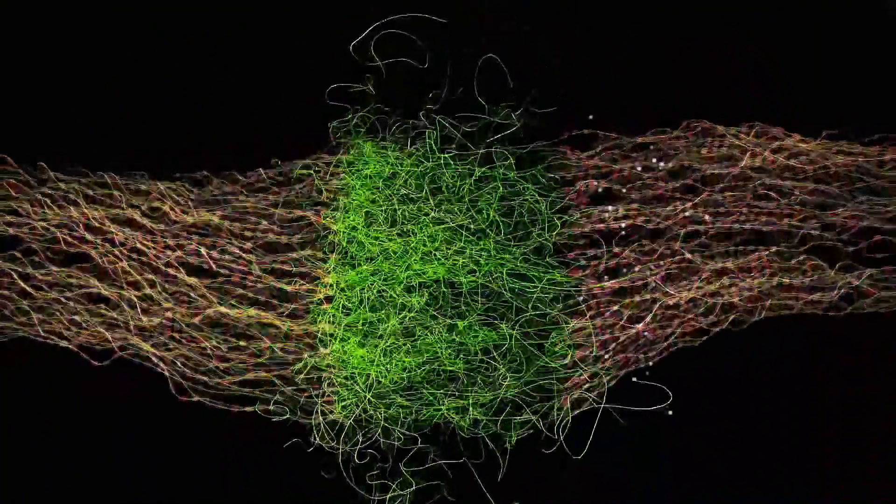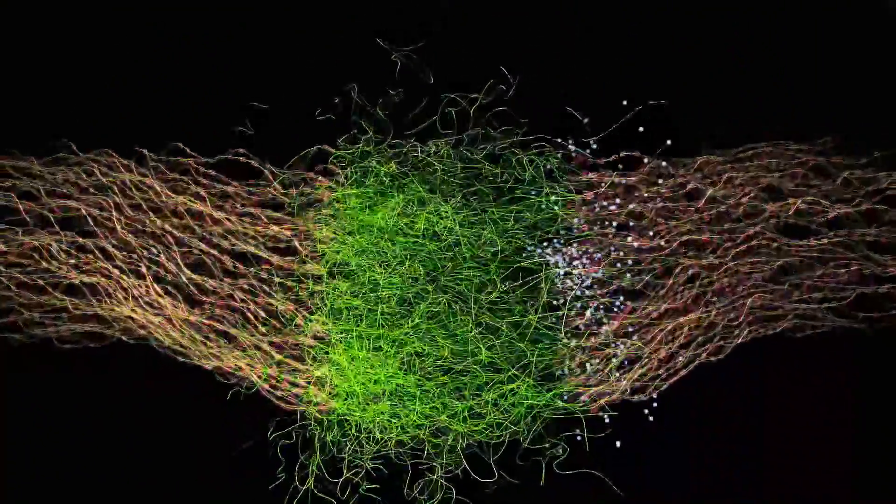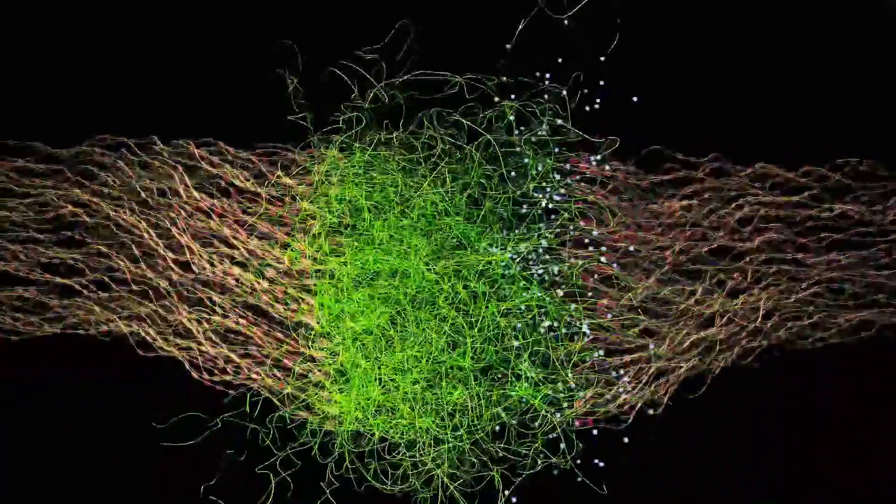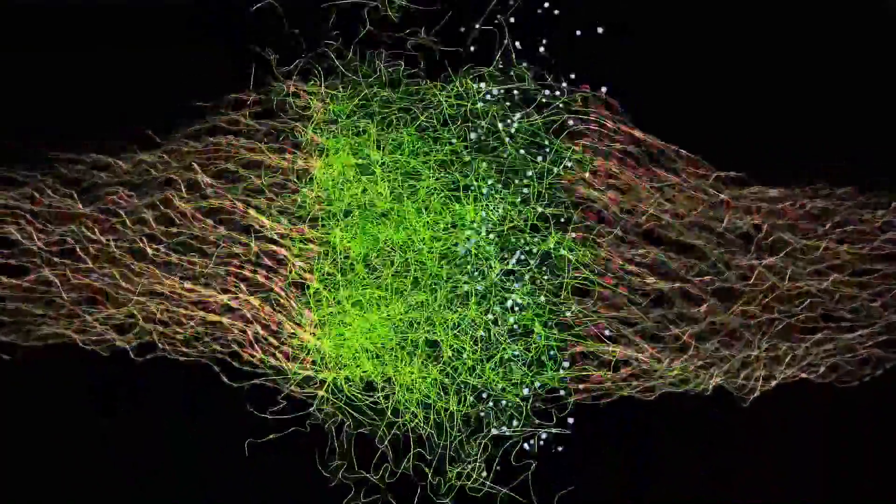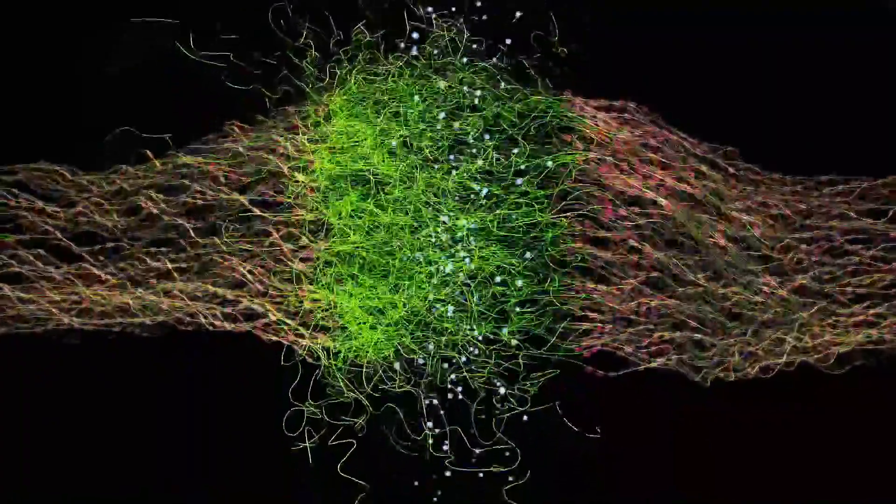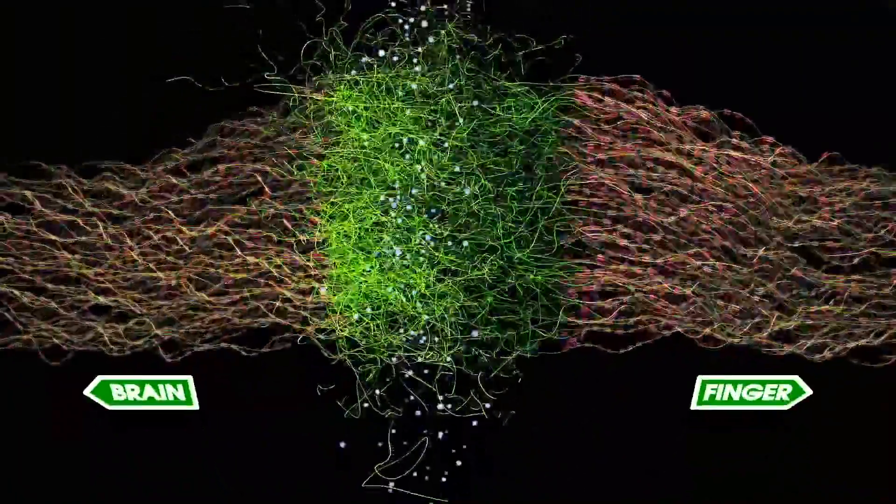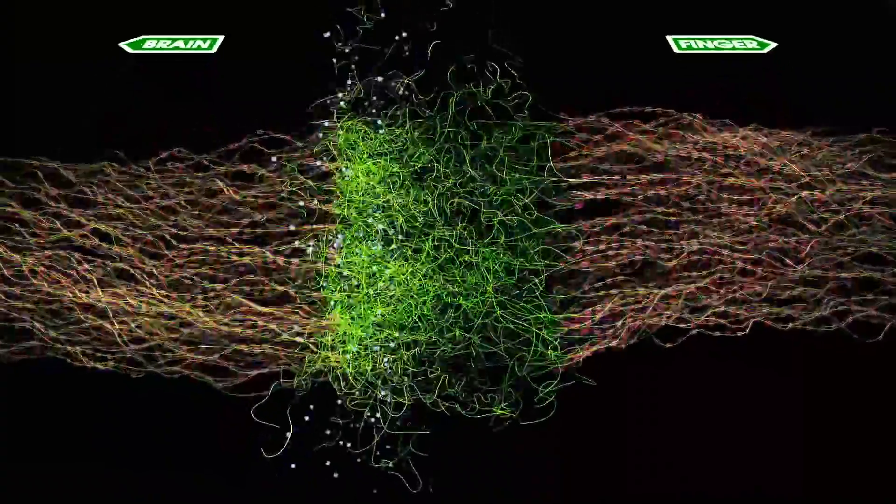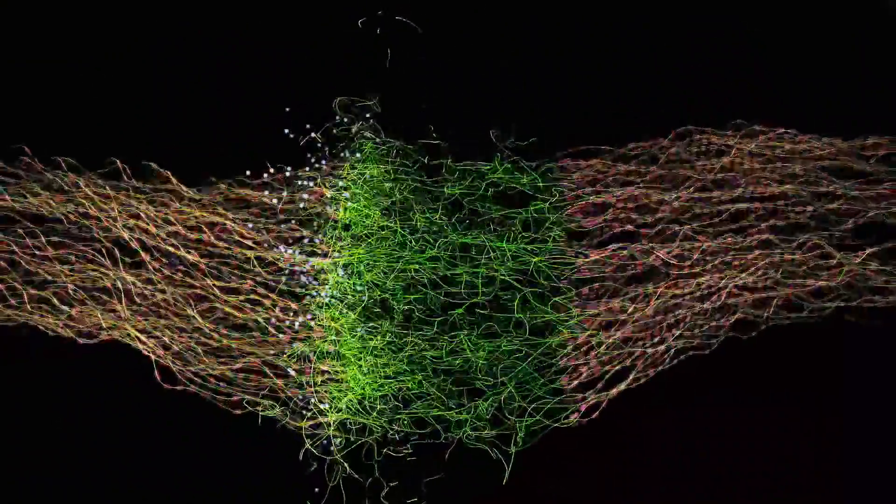Sprouts that do not manage to cross the injury site and grow back to the target may die, but others can remain. In some cases, these may generate spontaneous electrical signals that can lead to the development of abnormal sensations and in some cases, chronic pain.